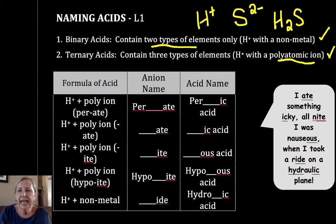Now a student came up with a phrase that I think will help you: 'I ate something icky.' So if the polyatomic ion ended in -ate, whether it's per-ate or just -ate, you drop the -ate, add -ic and the word acid.